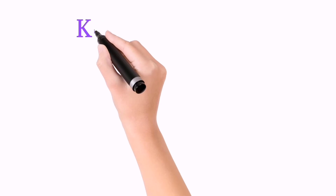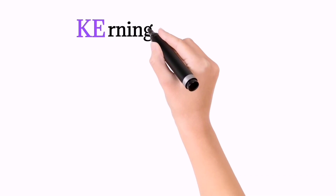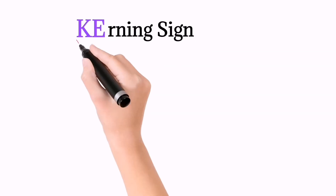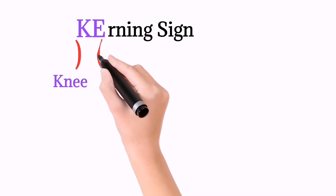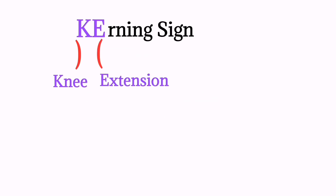Mnemonics to remember Kernig sign: in Kernig, K represents knee while E represents extension. So knee extension is painful — this is Kernig sign.